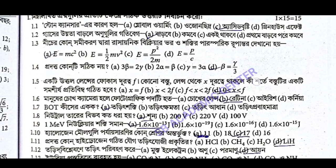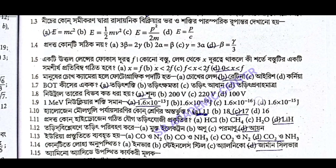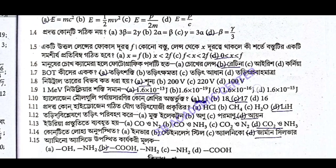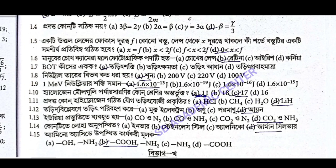1.9 is a nuclear power — 1.6 multiply 10 inverse 13. 1.9 is a halogen — answer is hydrogen. Answer is LiH. 1.9 answer is CO2.